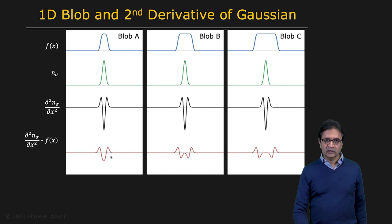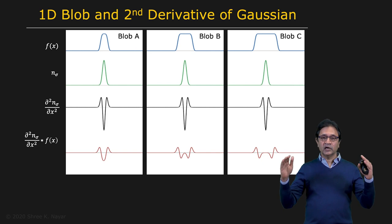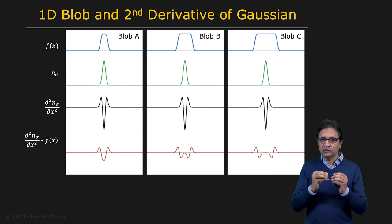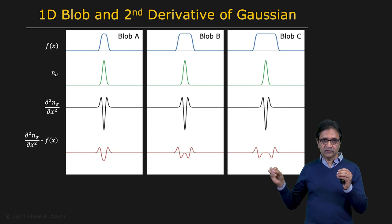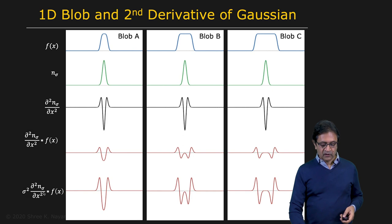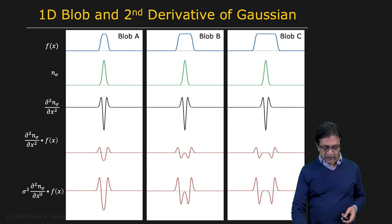One of the things we need to fix is that the response of this operator will depend on the sigma you use. As sigma gets wider, its peak value begins to fall, and therefore the response of the operator also reduces with a change in sigma. Since we are going to change sigma to find blobs at different scales, to fix that problem we multiply the second derivative of the Gaussian with sigma squared. This gives what's called a sigma normalized output.